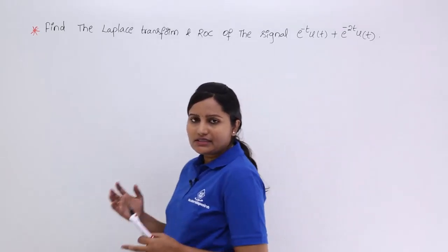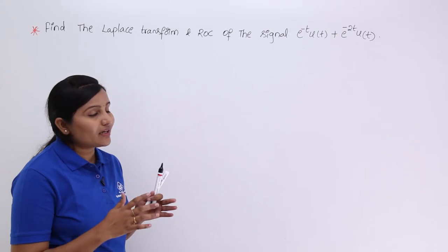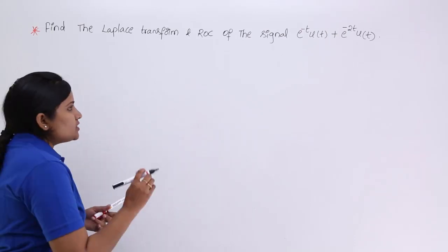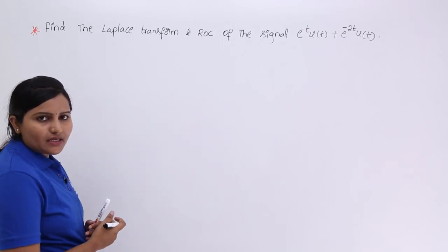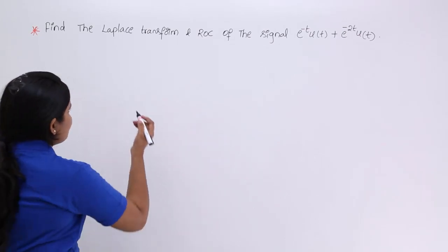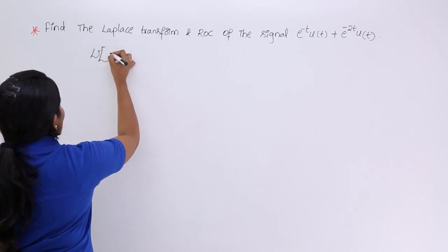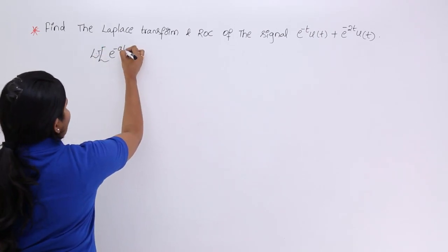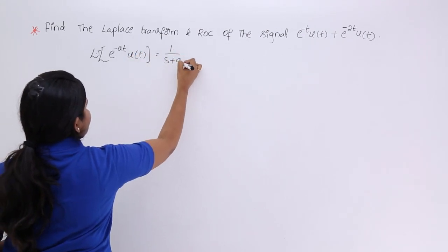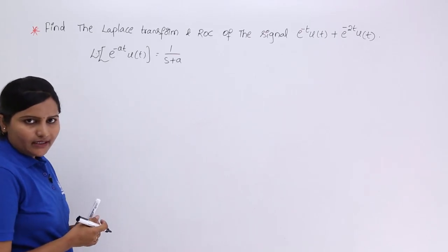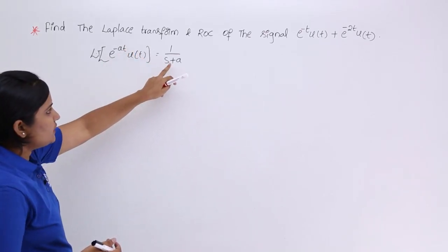This signal is a combination of two right-sided exponentials. We have already done some videos to calculate the Laplace transform of e power minus at u of t. To remind you again, the Laplace transform of e power minus at u of t is equal to 1 by s plus a.